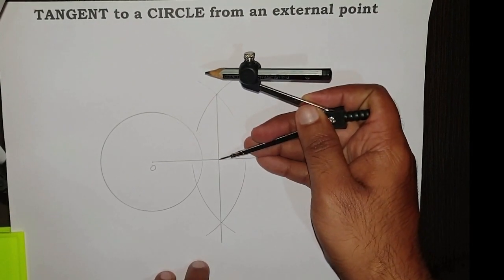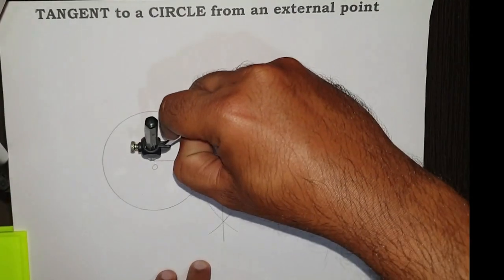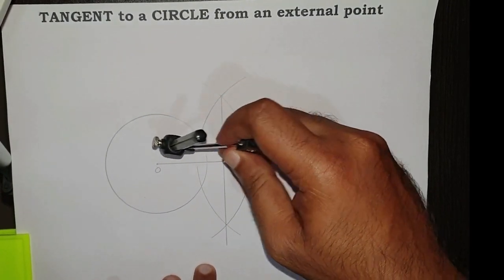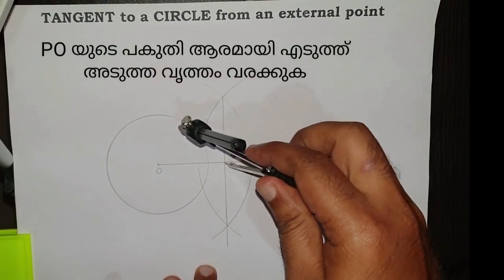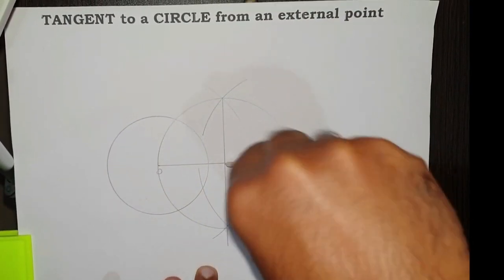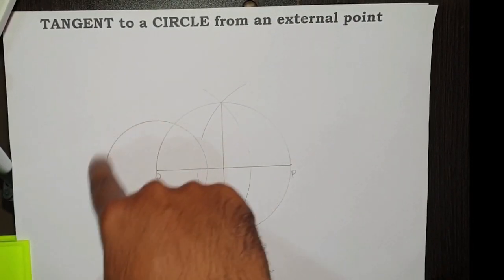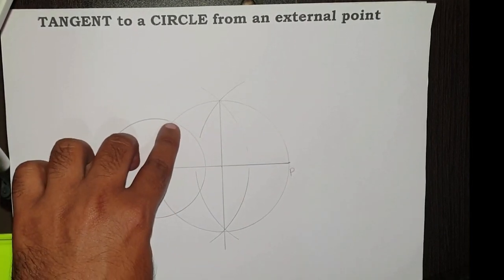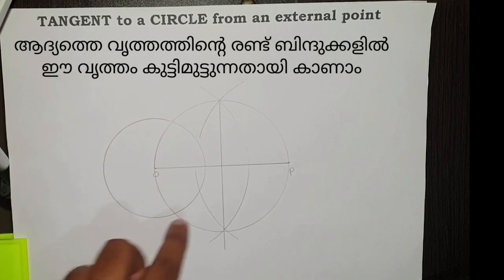Now, take this length, that is half of this line segment, as the radius of a circle. Now draw another circle which is passing through our previous circle. We can see there are two points which intersect these two circles.